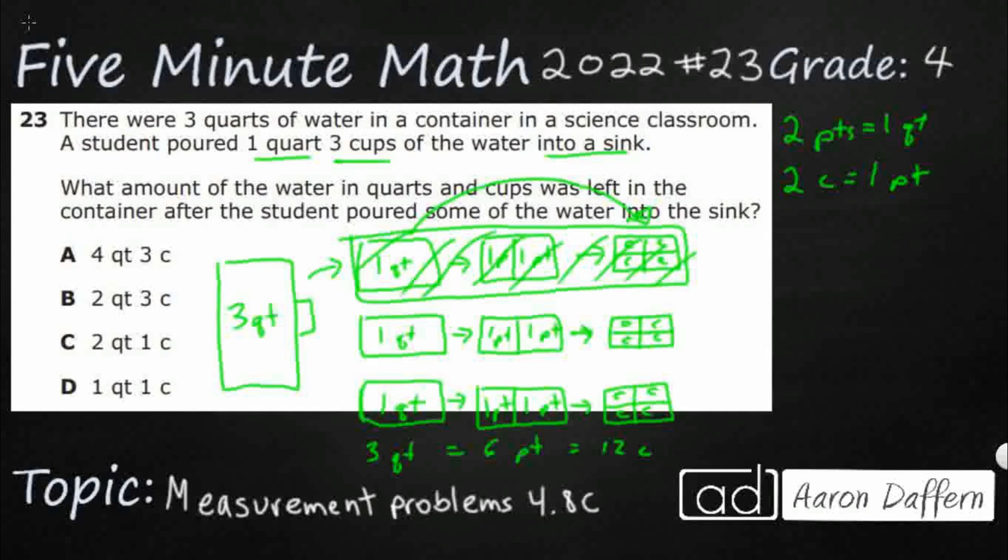And then three cups. Okay, so I'm going to get rid of this one, and this one, and this one. All right, so what's left? Well, I've got that little guy right here, and I've got this whole row right here.